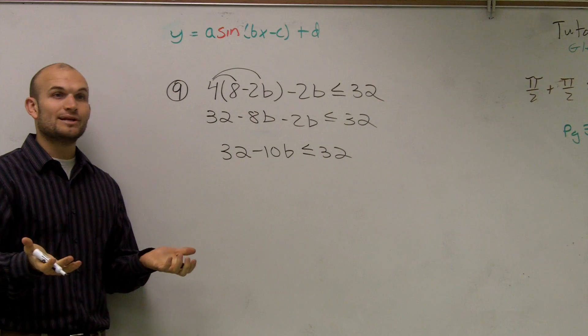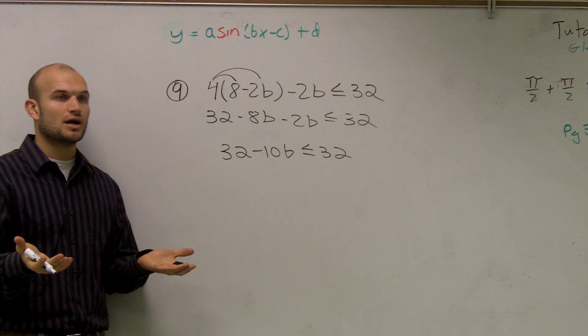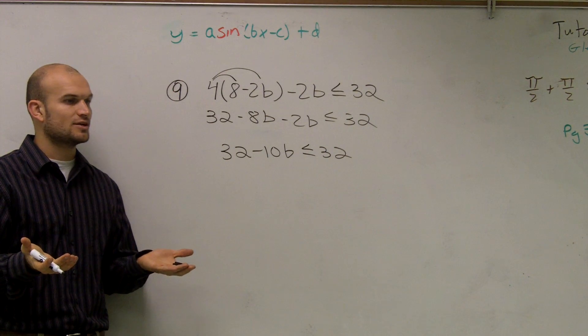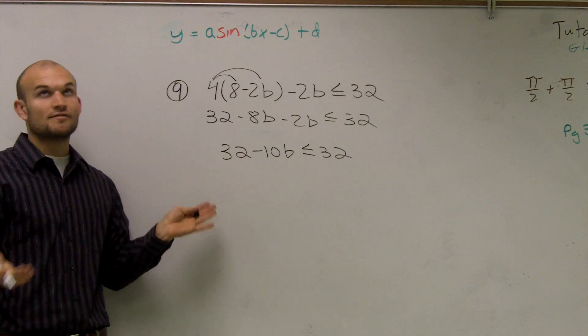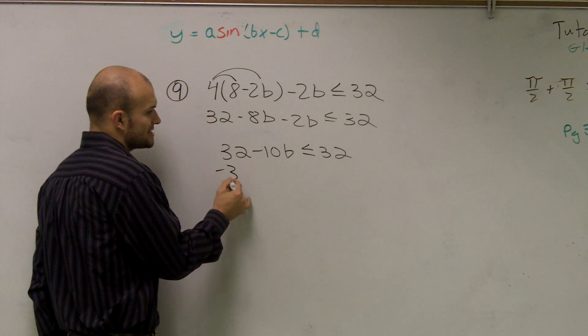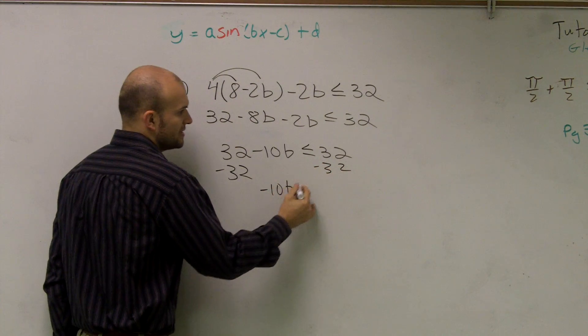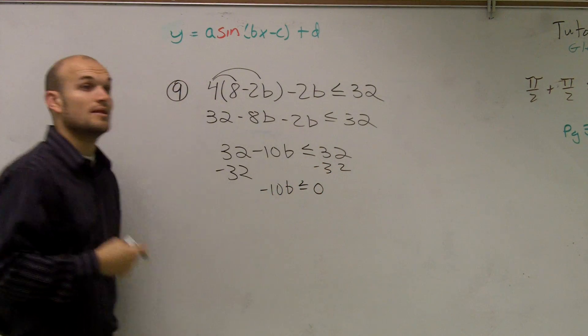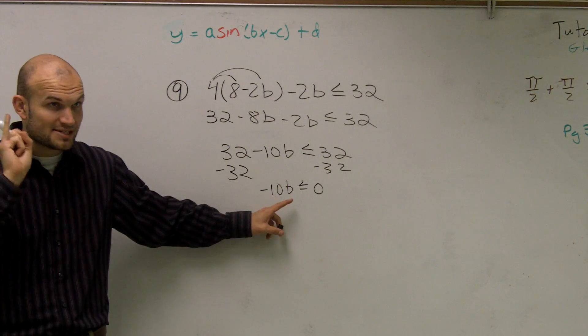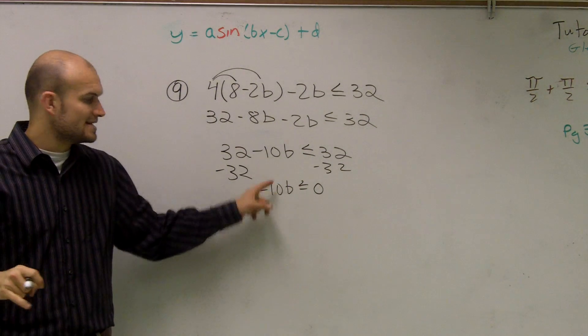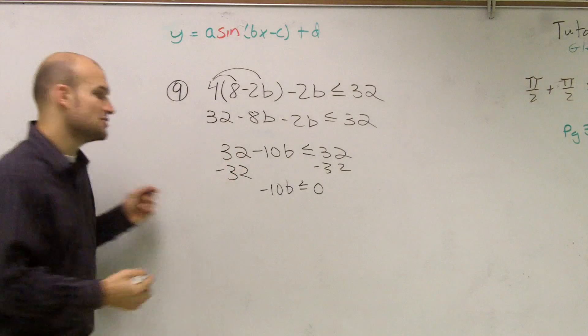Now what we need to do is use our properties of inequality to solve for b. I subtract 32 on both sides. Therefore I have negative 10b is less than or equal to 0. Then to get our b, we need to solve for one single number, so I say negative 10 is multiplied by b, to undo that I divide by negative 10.